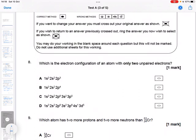So 1s2, 2s2, they're both going to be paired. The 2p3, if you remember seats on the bus, that's going to be that. So that's got three unpaired.